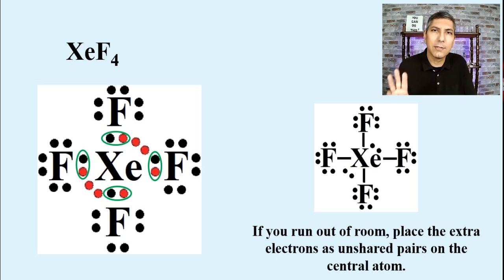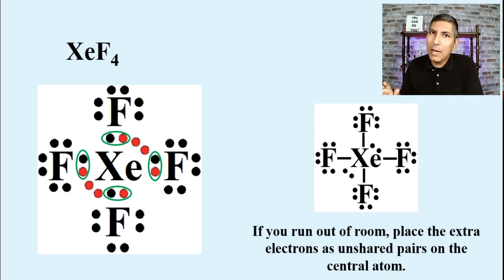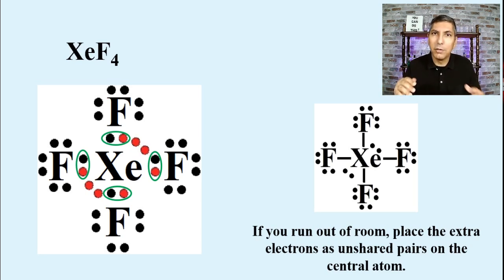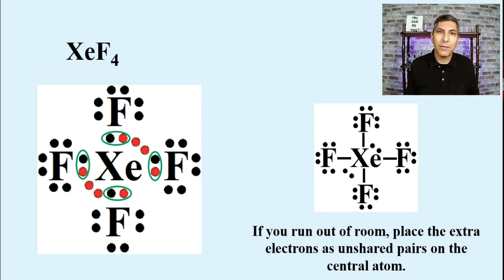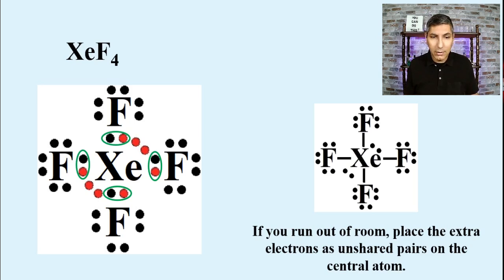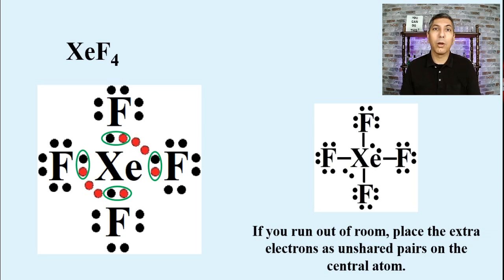These are the three cases — three rules — to watch for as exceptions to the octet rule. First, halogens can't make double bonds. Second, if an atom is bonded to more than four other atoms in a molecule, you're going to have an expanded octet. Third, if you run out of room when drawing a structure, you must place the extra electrons as unshared pairs on the central atom — another case of an expanded octet.